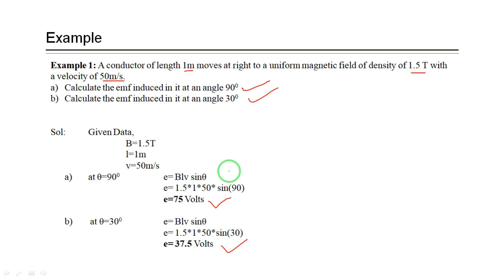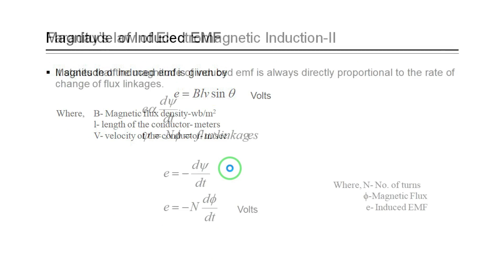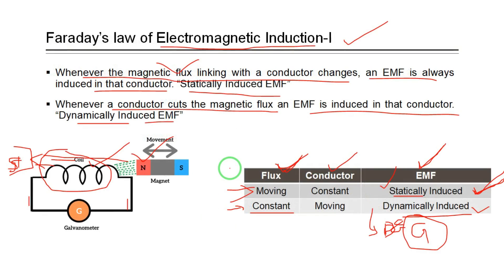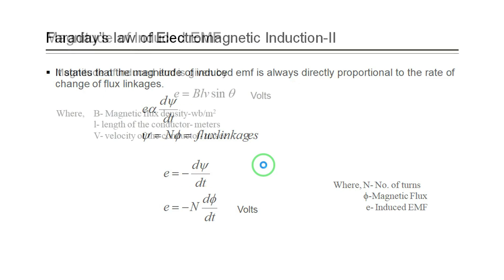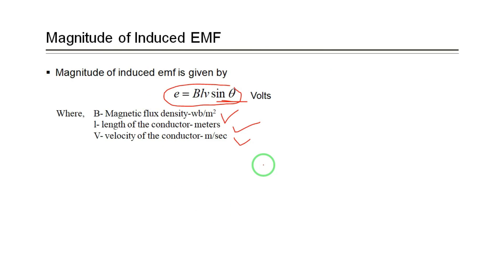These two laws are very important before going into the concepts of DC generators and transformers. All these machines depend upon the principle of electromagnetic induction. If you know Faraday's Law 1 and Law 2 clearly, you can easily understand the operation of transformers, DC generators, and related machines. In the next class we will discuss the singly excited system.